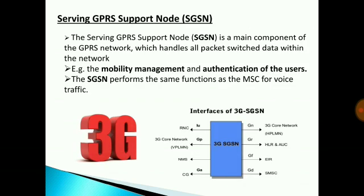Serving GPRS Support Node (SGSN): The Serving GPRS Support Node is a main component of the GPRS network which handles all packet switched data within the network. Functions include mobility management and authentication of users. The Serving GPRS Support Node performs the same function as the MSC does for voice traffic.